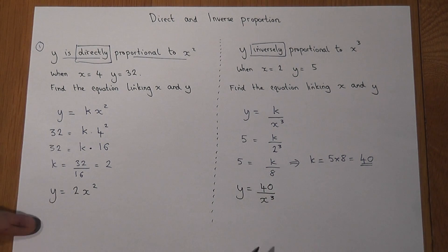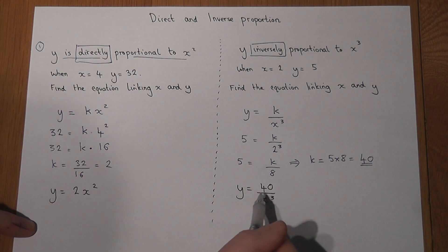And for example, if x was 10, 10 cubed is a thousand, so to find y I'll do 40 divided by a thousand.